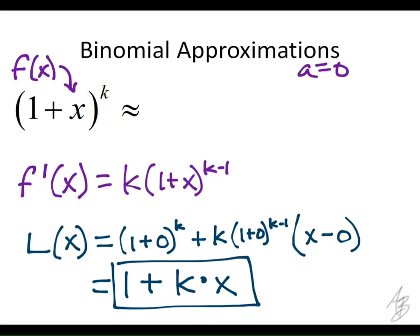So the linearization equals that, which means this binomial is approximately equal to 1 + kx for values close to 0.